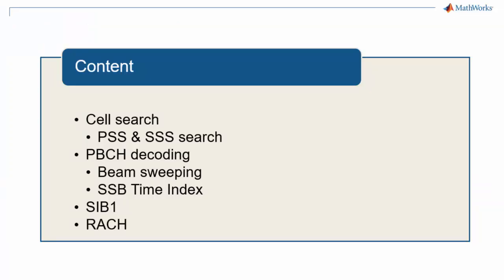We'll look at the phases of cell search and the role of the primary and secondary synchronization signals. Then we'll look at PBCH decoding to retrieve the master information block and how this procedure supports beam sweeping. Recovering the SSB time index is a crucial step in decoding the MIB. We'll discuss the next piece of information a UE accesses after the MIB, the System Information Block Type 1 or SIB1.